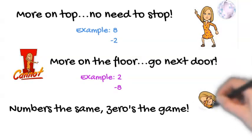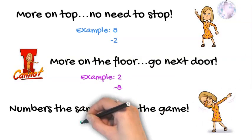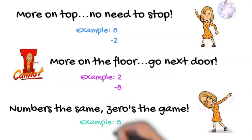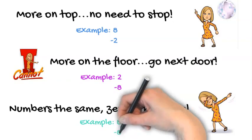Numbers the same? Zero is the game. Whenever you subtract 2 numbers that are the same, our answer is always zero. Like 8, take away 8.